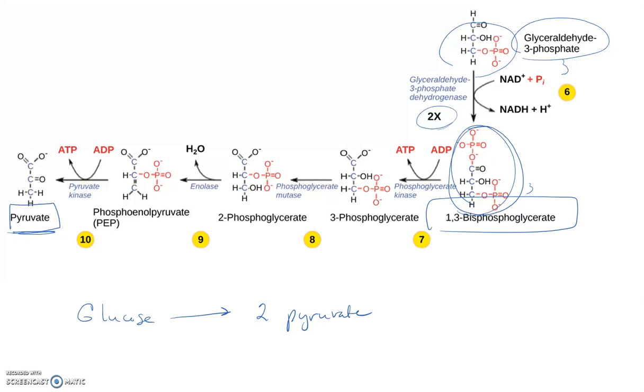Do we still have all six carbons? Yes, we do, because pyruvate has three carbons and we have two of those, so we haven't lost any carbons yet to carbon dioxide.